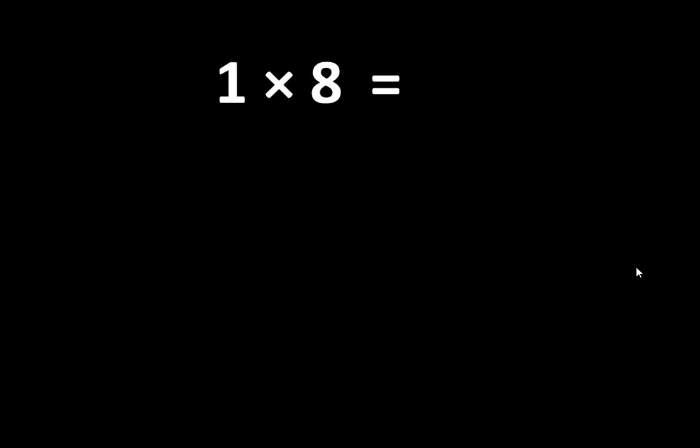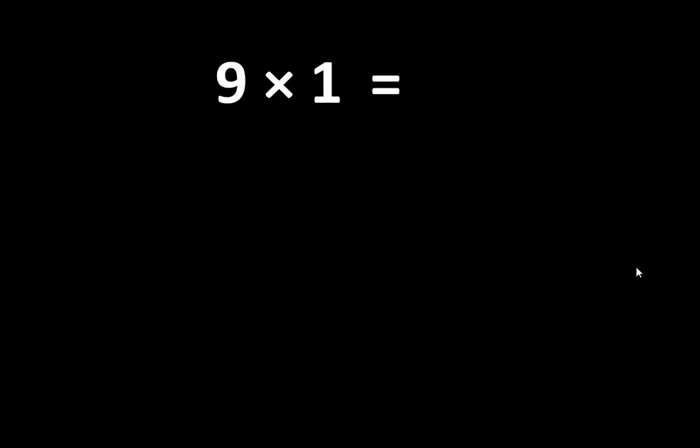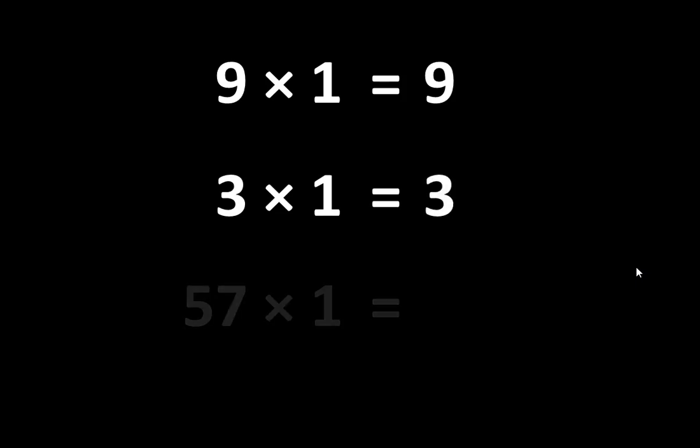For example, one times eight is equal to eight. One times four is equal to four. One times twenty-nine is equal to twenty-nine. Nine times one is equal to nine. Three times one is equal to three. Fifty-seven times one is equal to fifty-seven.